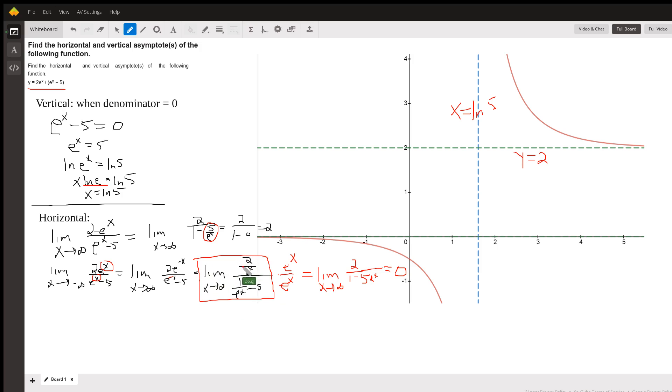this numerator approaches 0 as x gets bigger and bigger because it's like 2 over infinity, so this is 0. And this approaches 0, so we are approaching 0 over negative 5, which is 0.